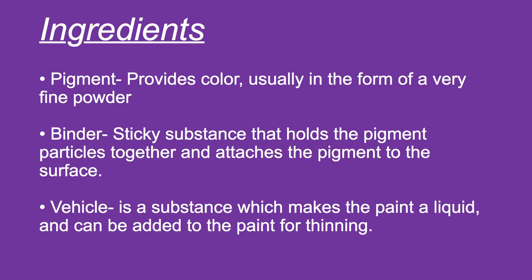Now we'll move into painting. There are three main ingredients in the medium that painters use: pigment, which provides color and is usually in the form of a very fine powder; binder, which is a sticky substance that holds the pigment particles together and attaches the pigment to the canvas surface; and the vehicle, which is a substance that makes the paint a liquid and can usually be added to make the paint thinner.